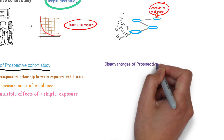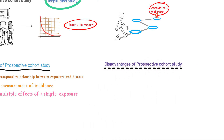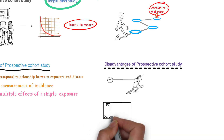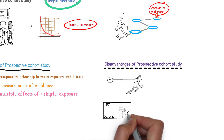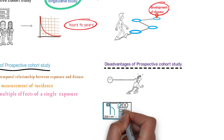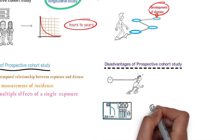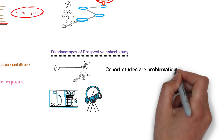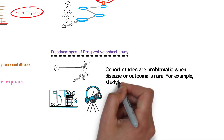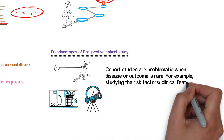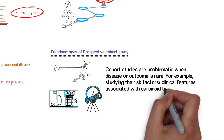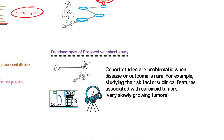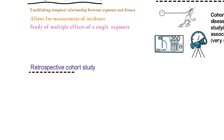Disadvantages of prospective cohort studies: time-consuming — the study takes a relatively long time to complete. Diseases that develop over a long period of time or with conditions that occur as a result of long-standing exposure require many years, hence high costs. There is a long wait until results are obtained, and loss to follow-up. Cohort studies are also problematic when disease or outcome is rare, for example studying the risk factors and clinical features associated with carcinoid tumors.